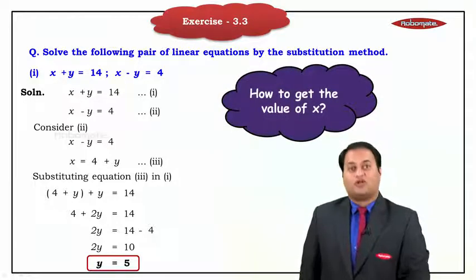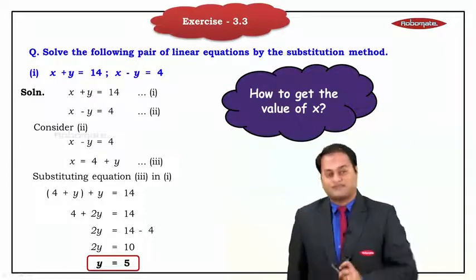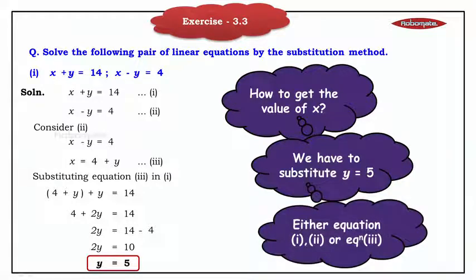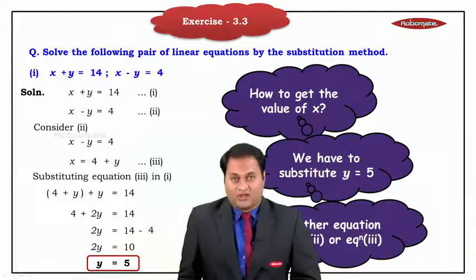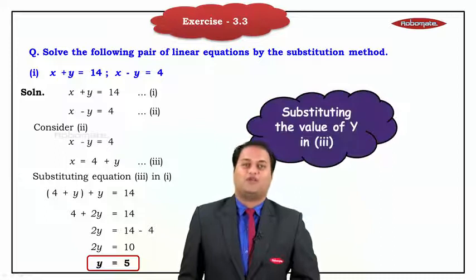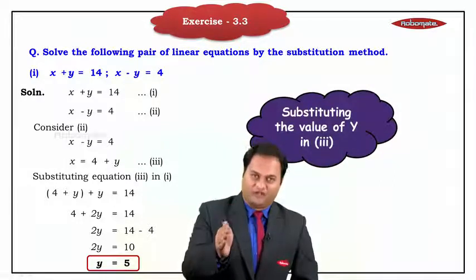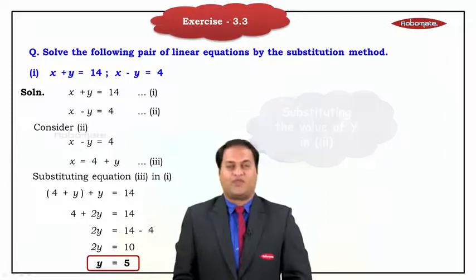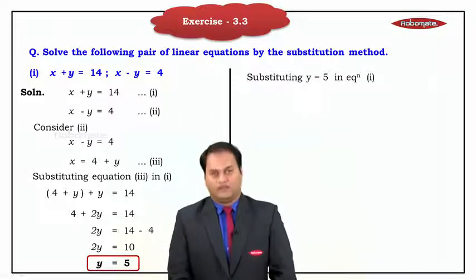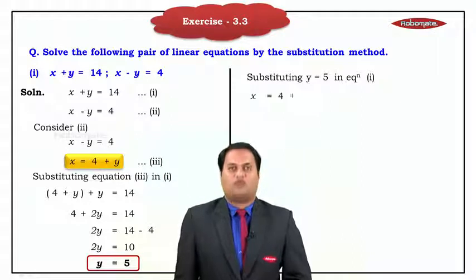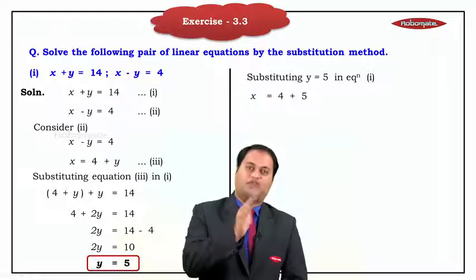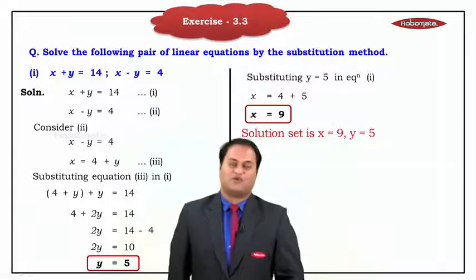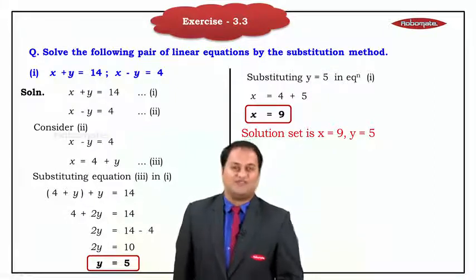Once we get the value of y, we need to find the value of x. To find x, substitute y is equal to 5 in equation number 3 — it is always better to substitute in equation number 3. Substituting y is equal to 5 in equation number 3, we get x is equal to 4 plus 5, so x is equal to 9. We got x and we got y. Write the final answer: the solution is x is equal to 9, y is equal to 5. This is the substitution method.